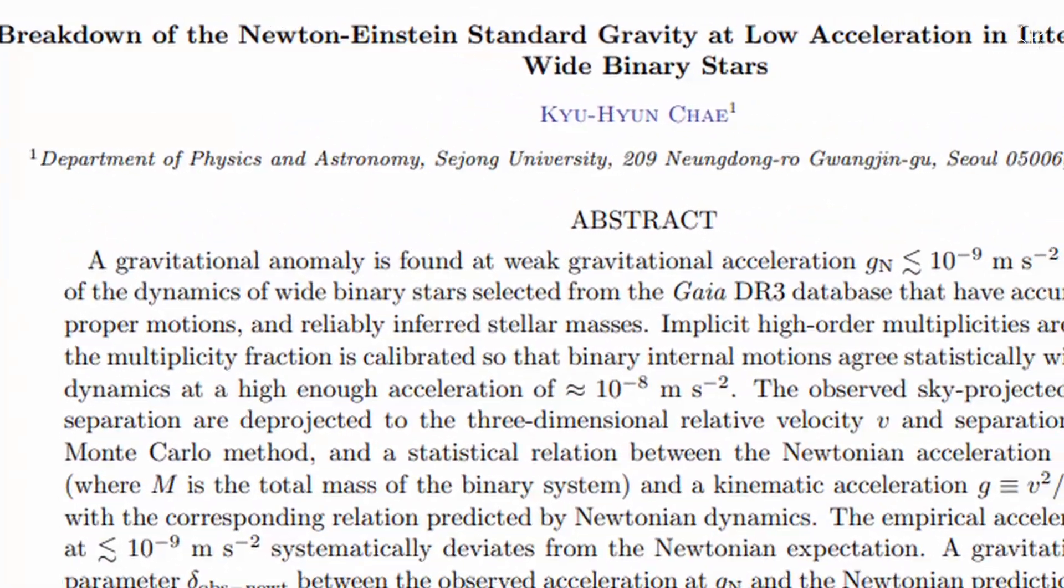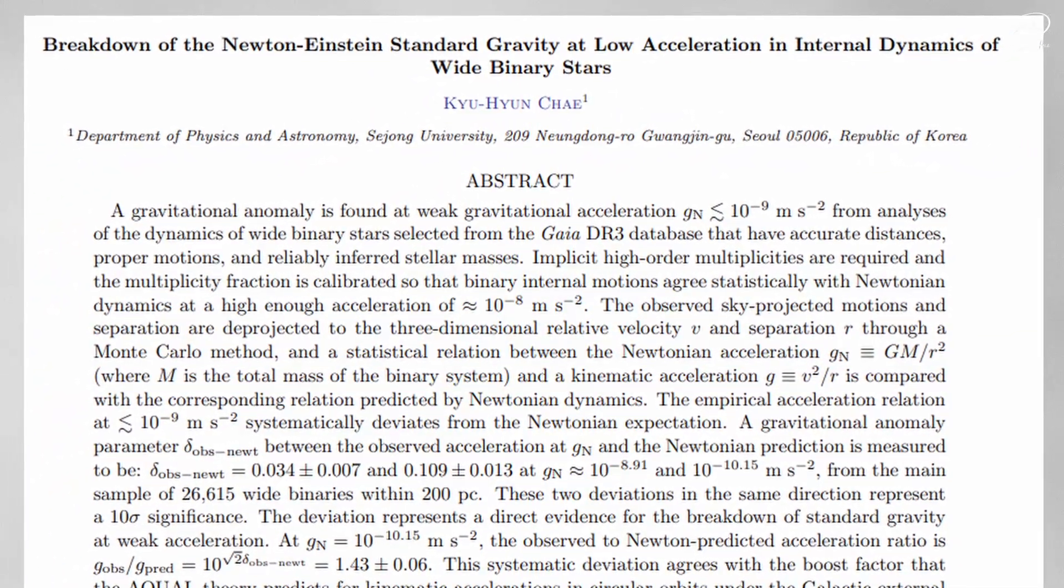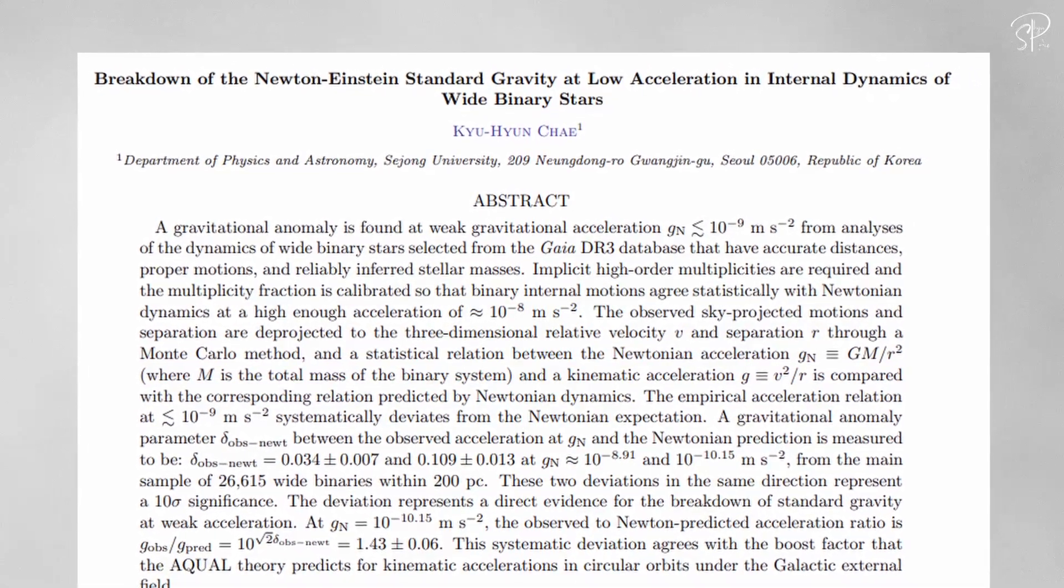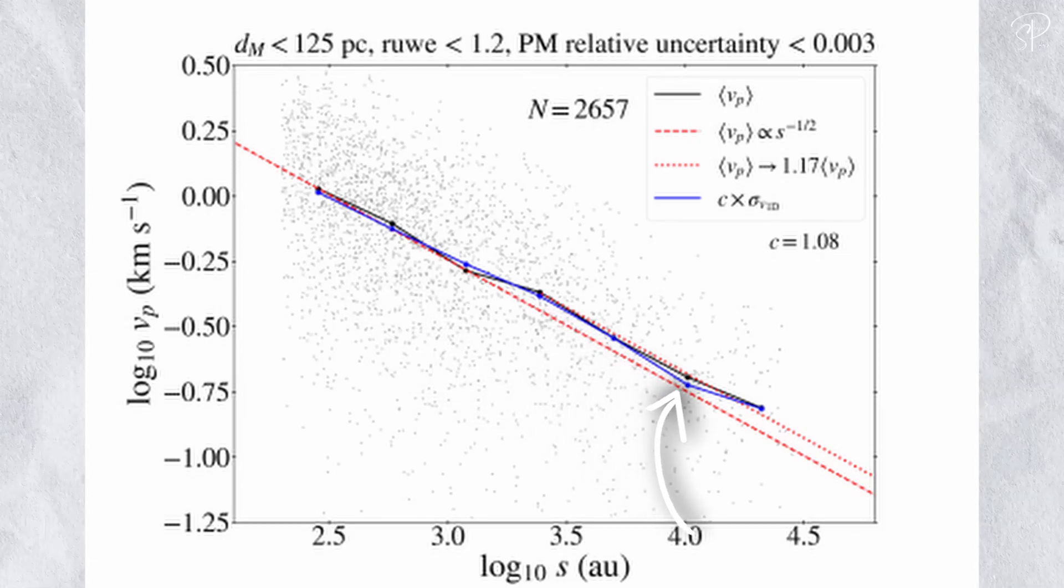Enter Che's research paper. Che also harnessed Gaia's data to conduct the same test, plotting separations against calculated orbital velocities. The results? Well, the gray points in their graph represents the data, while the red dashed line shows the typical Newtonian predictions, and the red dotted line represents MOND's predictions due to its deviation at lower accelerations.